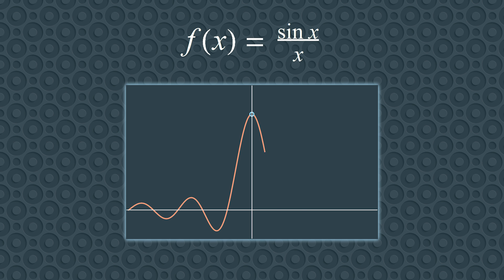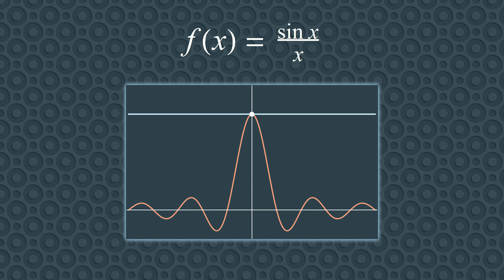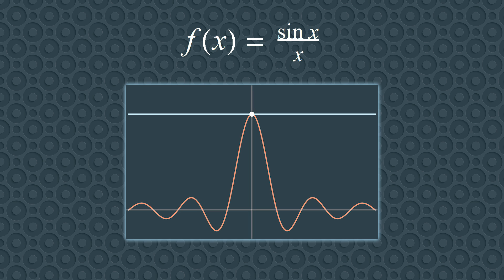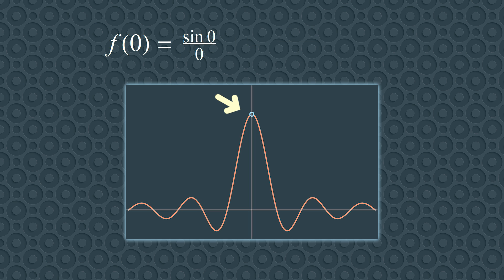Let's see some examples to show you why you need to be careful with this definition. First, look at the graph of f(x) equals sin(x)/x. What is the tangent line to the point? You could use the method of picking a nearby point P and letting it approach the point. Whether you approach from the left or the right, in both cases, the limit of the secant lines is the horizontal line y equals 1. This line, however, does not touch the curve — because the point is not on the graph, since plugging in x equals 0 gives division by zero. So this curve does not have a tangent line at that point.